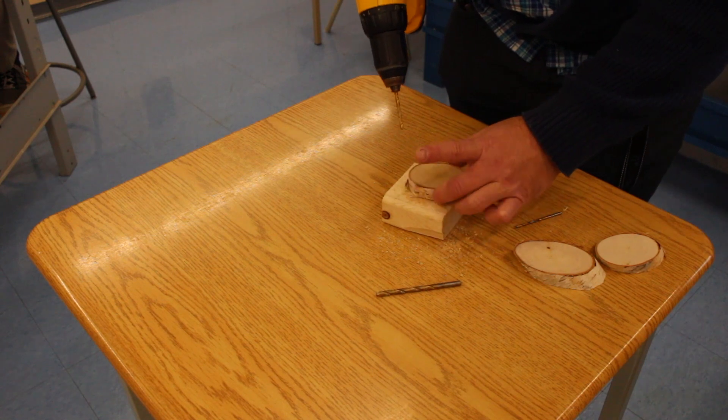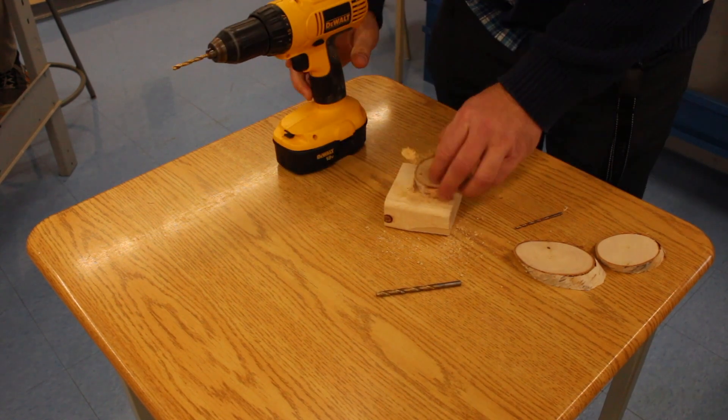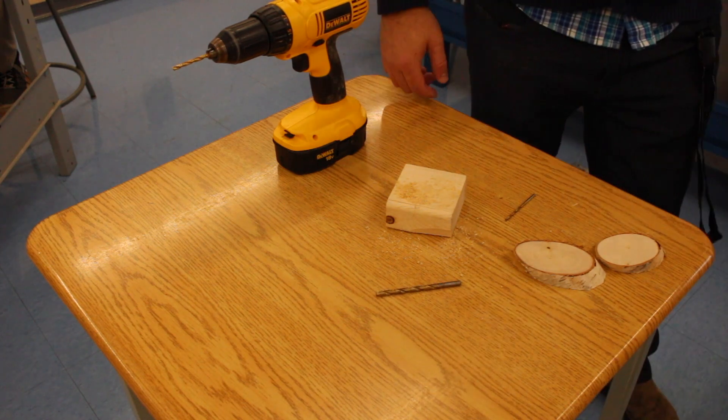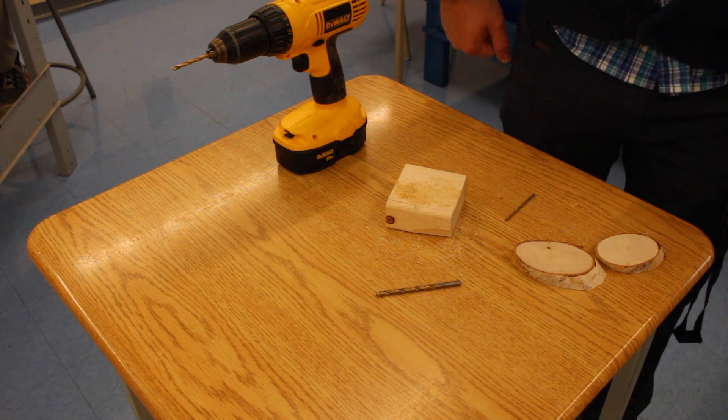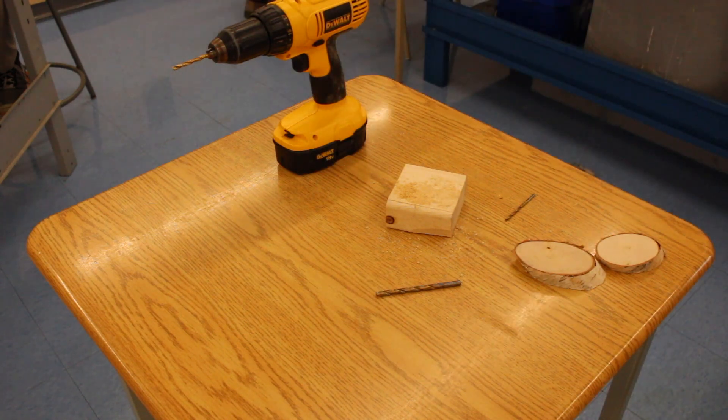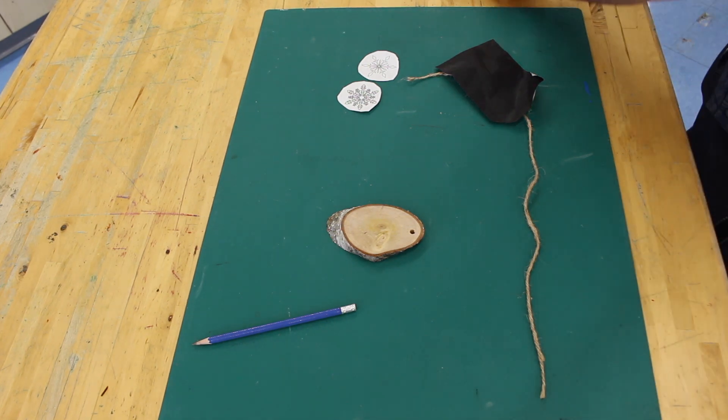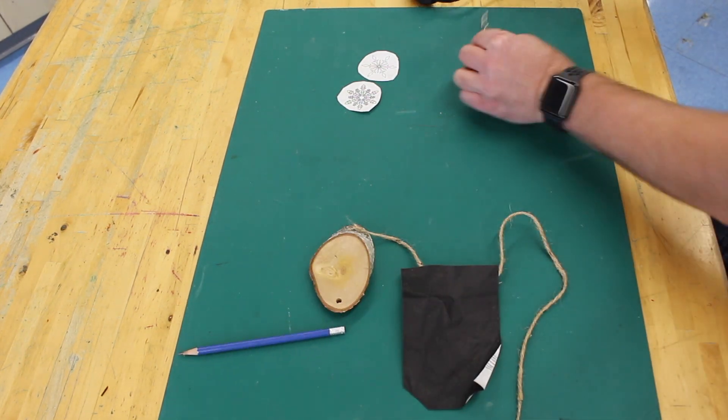I've also pre-drilled the holes in the birch discs for you. Notice I use a block of wood underneath the disc so that I don't drill through into the school desk, and that I drill through at a slight angle. These holes are so that you'll be able to pass the twine or ribbon through so that you can hang the ornaments when you're done.